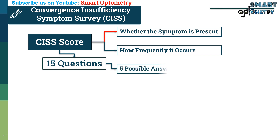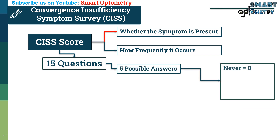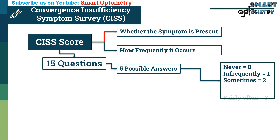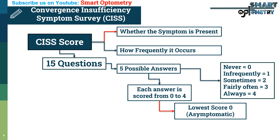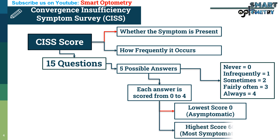A patient chooses one of five possible answers: never equals 0, infrequently equals 1, sometimes equals 2, fairly often equals 3, always equals 4. Each answer is scored from 0 to 4, with 4 representing the highest frequency of symptom occurrence. The CISS score ranges from a lowest possible score of 0, indicating the patient is totally asymptomatic, to a highest possible score of 60, indicating the patient is most symptomatic.